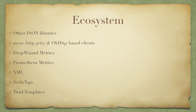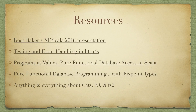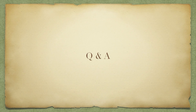Circe is not the only supported JSON library — practically all the popular JSON libraries are supported. You have a couple of different metrics packages with Dropwizard and Prometheus. XML support because that actually is still a thing, believe it or not. Scala Tags and Twirl templates in case you don't just want a REST service but actually have to generate some HTML. There are all sorts of great resources about both HTTP4S and Doobie. Ross's presentation is at the top of the list, and Rob Norris has done some really awesome presentations about Doobie, especially about how types work — doing straight SQL in a strongly typed way with Doobie. Thank you for coming.